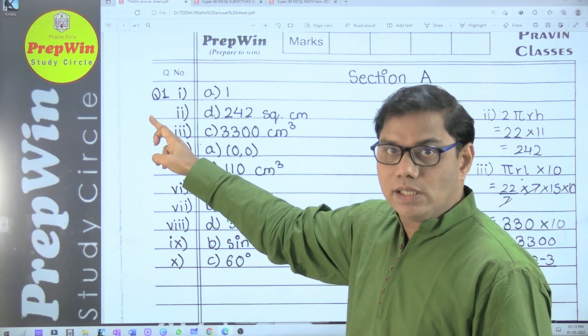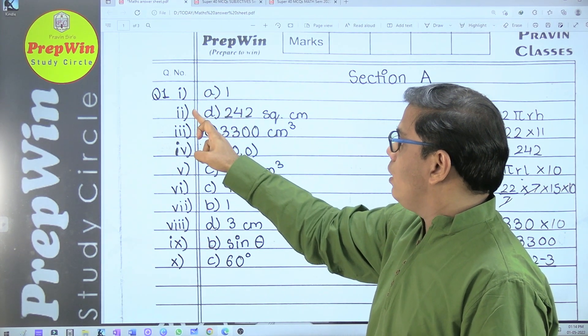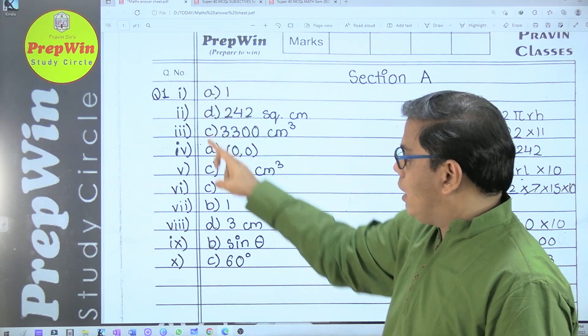Question number one is a compulsory question from Section A, then question number two, question number three, and so on.